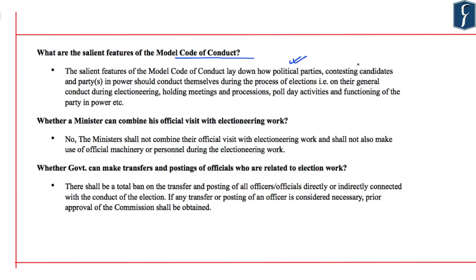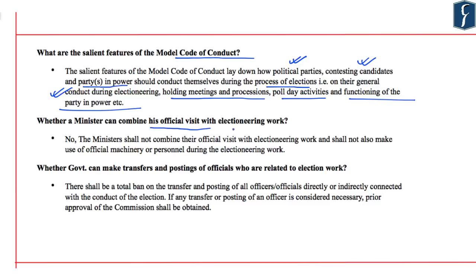The MCC becomes applicable on general conduct during electioneering — with respect to holding meetings and processions, poll day activities, and the functioning of the party in power when the MCC comes into effect. On whether a minister can combine official visits with electioneering work, the answer is simply no. Ministers shall not combine their official visit with electioneering work and shall not make use of official machinery or personnel during electioneering — basically, ministers cannot use public money for political ends.